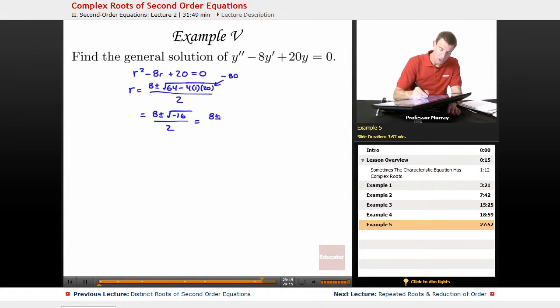Now the square root of negative 16 is imaginary, that's 8 plus or minus 4i over 2, and that simplifies down to 4 plus or minus 2i.